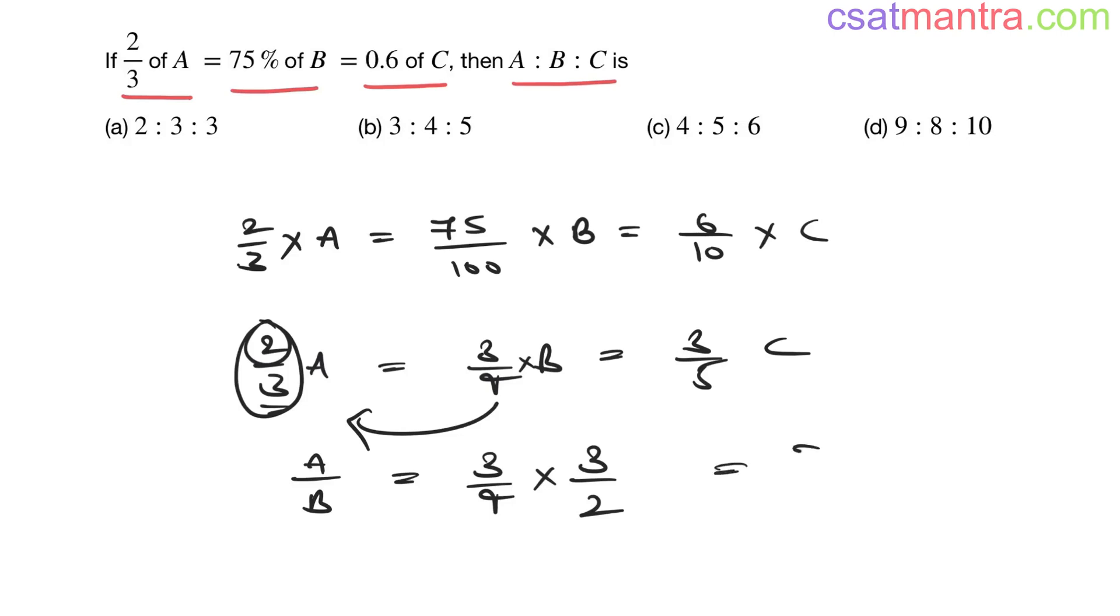A by B is equal to 3/4 into this 2/3, it gets reversed. 3 will be in numerator because it's in denominator here. 2 will be in denominator because it's in numerator here. So this is 9/8. A:B should be 9:8.